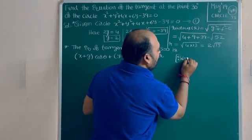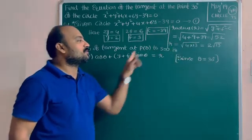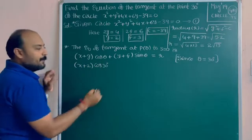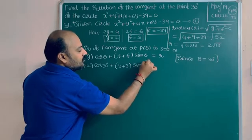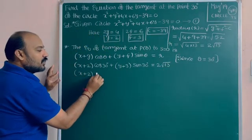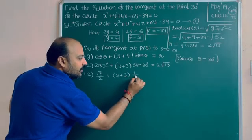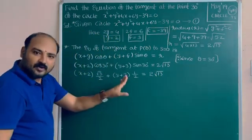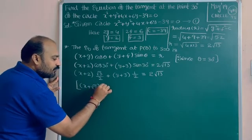Since θ = 30°, substitute g, f, and r: (x + 2)cos30° + (y + 3)sin30° = 2√13. This gives (x + 2)(√3/2) + (y + 3)(1/2) = 2√13.